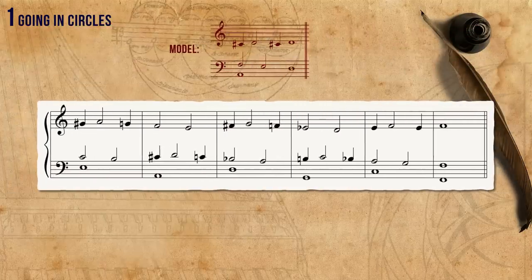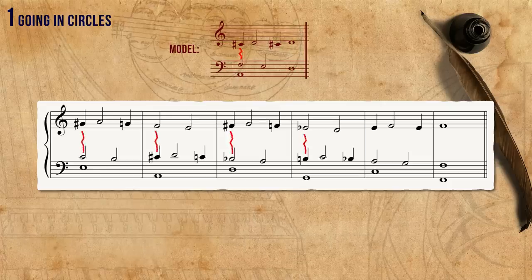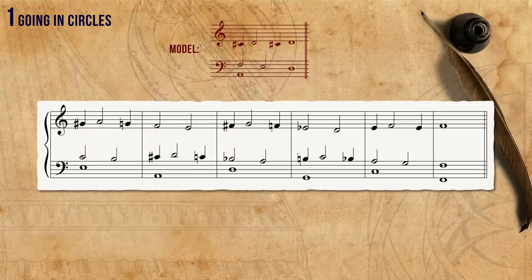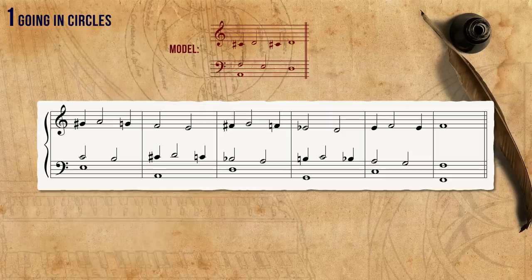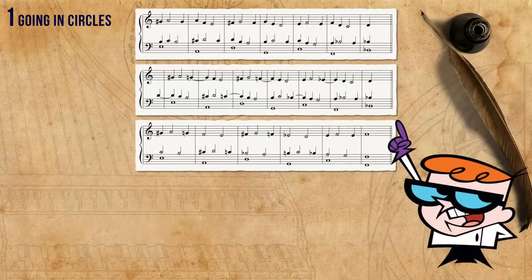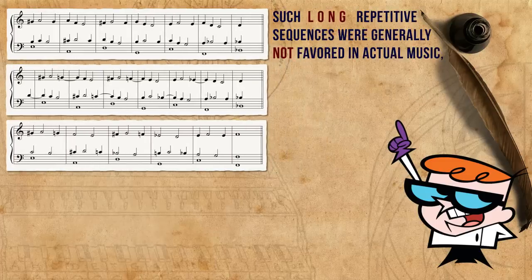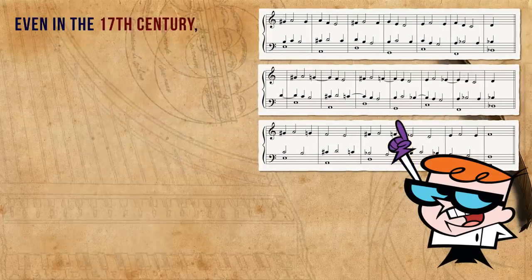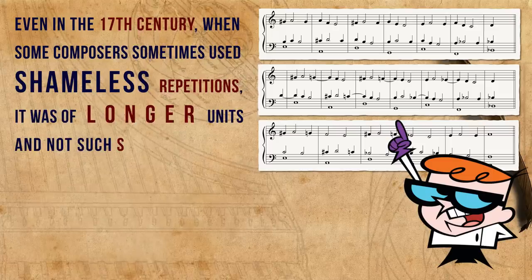Another option is to use the variant where the tenoritzans is divided. As we said, due to its bad interval on the first step, it was used only from the beginning of the 17th century, where such intervals were more accepted. It's worth noting that these examples are mere theoretical practices. Such long, repetitive sequences were generally not favored in actual music, and especially so in the 16th century, where variety was regarded as extremely important. Even in the 17th century, when some composers sometimes used repetitions, it was of longer units and not such short fragments.